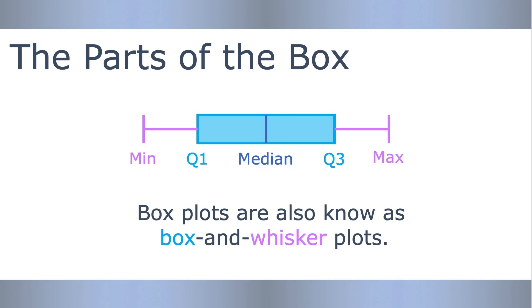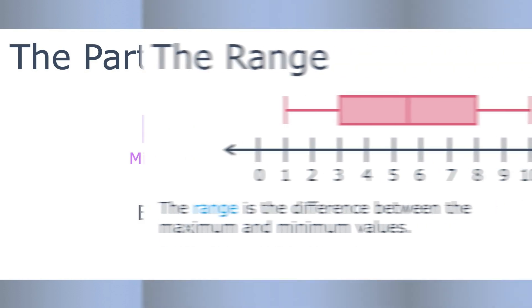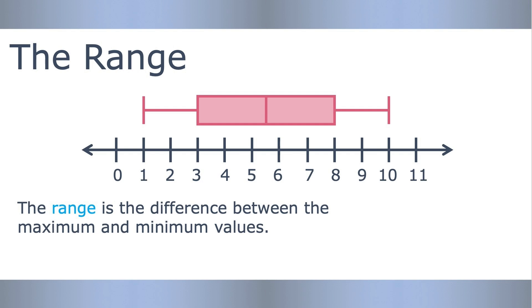You can also calculate other measurements from a box plot. The range is the difference between the maximum and minimum values. It's a way to measure the total spread of the data set. With this data, we need to take 10 minus 1, so the range is 9. The distance from the lowest value to the highest value is 9.